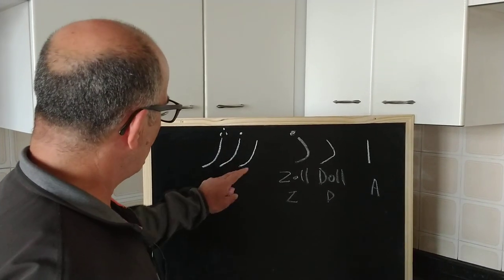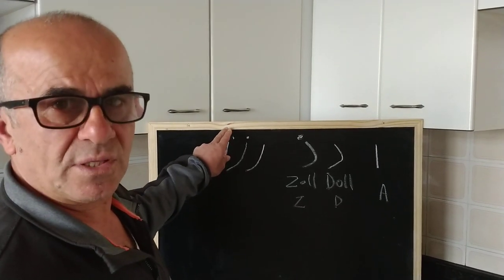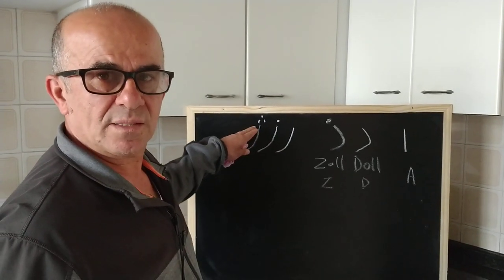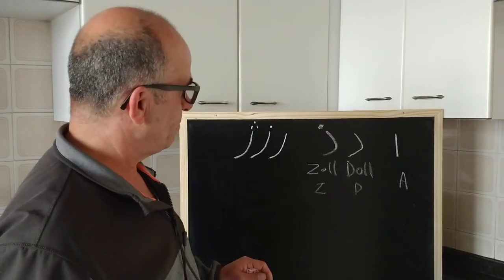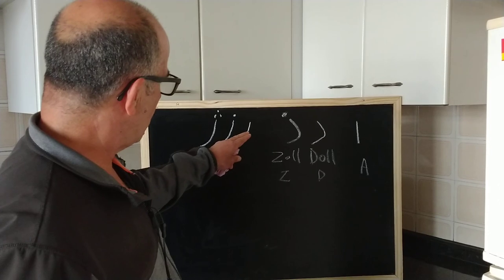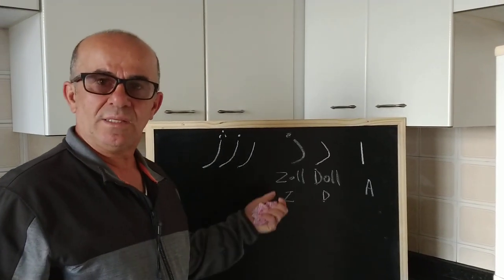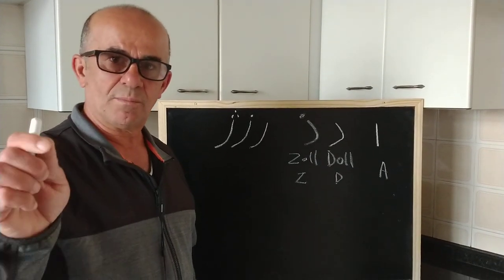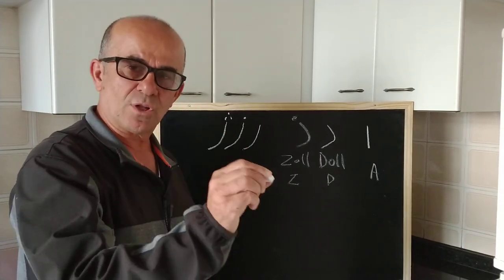So Re, Ze, Ge. With a dot and three dots at the top of the letter Re, we turn it into Ze or Ge. So to summarize: Aleph, Dal, Zol, Re, Ze, Ge — these are the letters that we cannot join. When we come to them, we have to stop and start again.